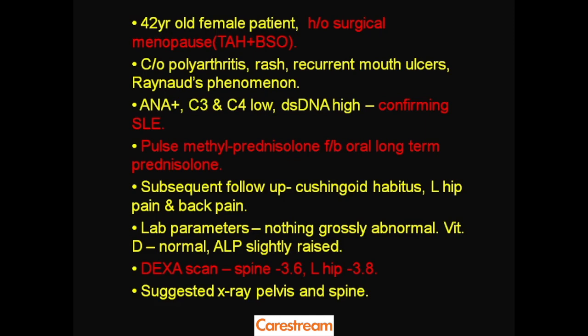On subsequent follow-up, the clinician is quite surprised — she has typical cushingoid habitus: moon face, buffalo hump, truncal obesity, indicating long-term steroid use. She has come mainly for two things: left hip pain and back pain. The lab parameters now show nothing grossly abnormal and vitamin D was quite surprisingly normal. Alkaline phosphatase (ALP) was mildly raised.